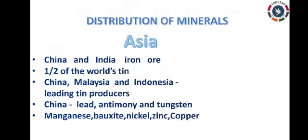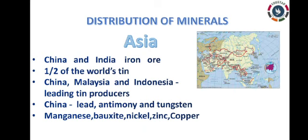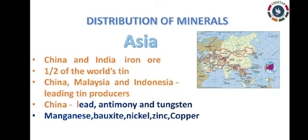In the Asian continent, China and India have larger deposits of iron ore. The Asian continent produces half of the world's tin production. It is mainly produced in Indonesia, China, and Malaysia. China also leads in the production of lead, antimony, and tungsten. These are the main minerals of the Asian continent.